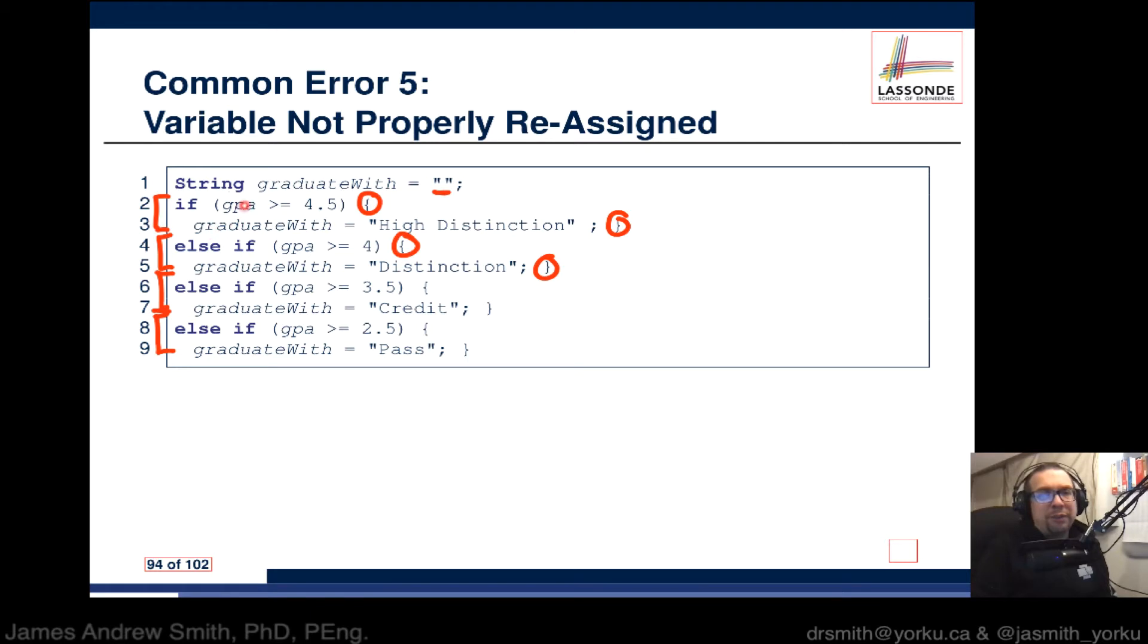The first one checks if GPA is greater than or equal to 4.5, and if that's the case, they get a high distinction assigned to graduateWith, replacing the blank string. If they didn't have above 4.5 but have something above 4, they get distinction. Above 3.5 gets credit, and above 2.5 gets a pass.